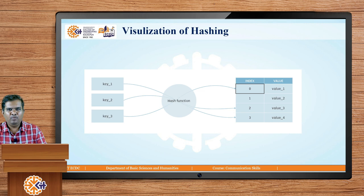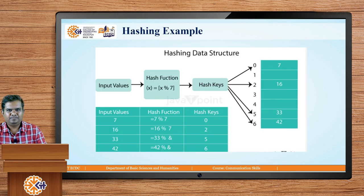If we want to perform a searching operation, we perform the same hash function on the key and can find out the corresponding value from the hash table with a complexity of O(1). Now let us look at a real example of how hashing is performed to find the index of a value inside the hash table.